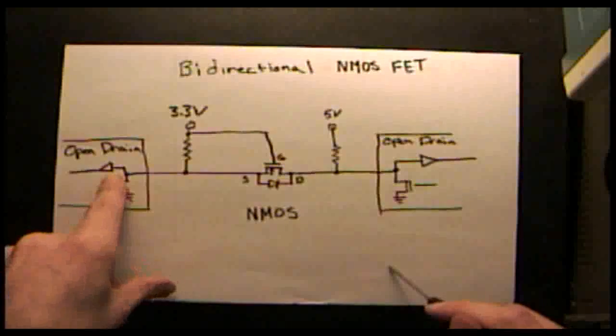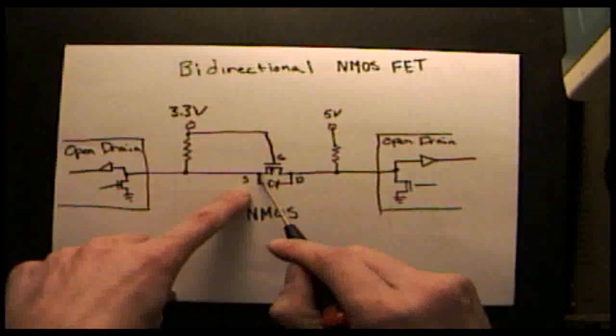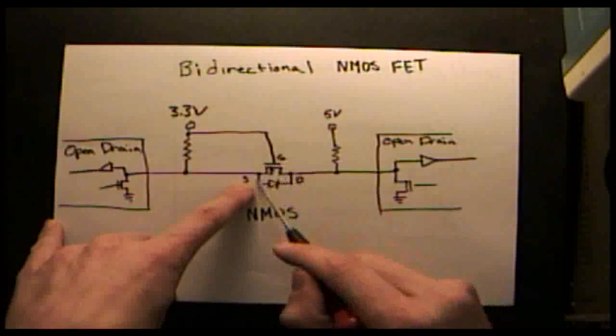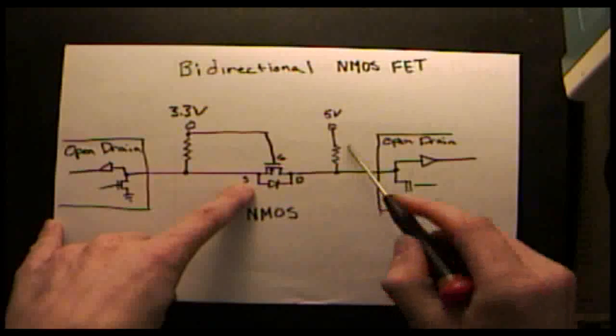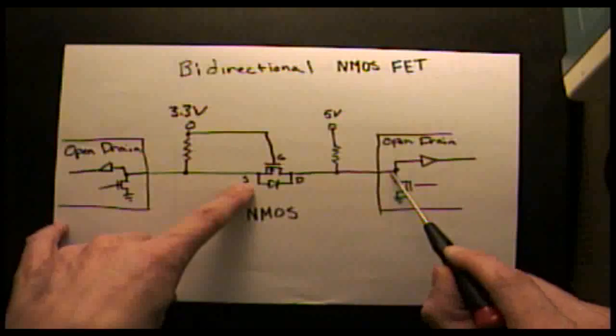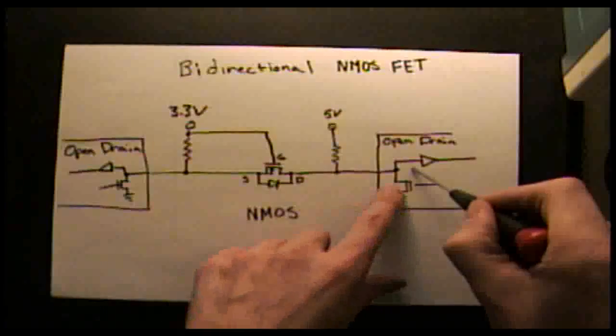When you're driving from the 3.3-volt side, you pull low on this side, which starts to lower the voltage on the source, which changes the threshold voltage of this transistor that allows it to conduct, which then also pulls down the 5-volt side down towards 0 volts, signaling a low to the 5-volt side of the system.